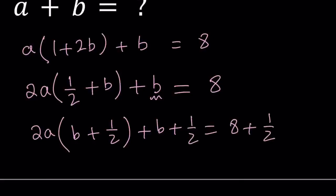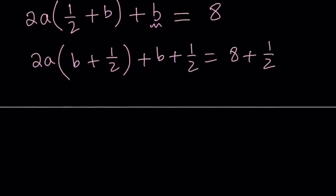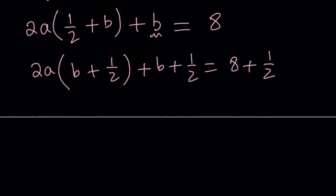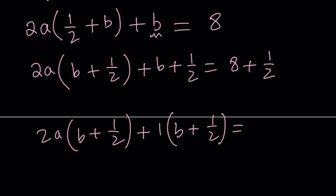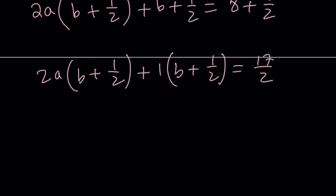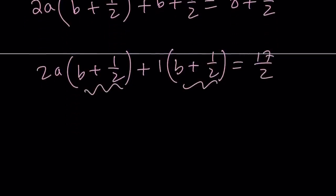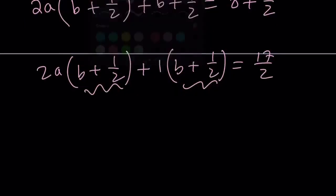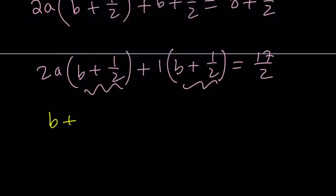By the way, there is an alternative approach. If you don't want to go through this, I'll briefly talk about it. Now we have b plus 1 half. And obviously, to find a common factor, we can go ahead and write this as 1 times b plus 1 half. That is equal to 8 plus 1 half, which can be written as 17 halves. Now we know that b plus 1 half is a common factor, right? So we can take it out. b plus 1 half multiply by 2a plus 1. That's how you write the second factor.